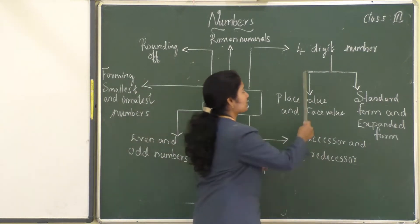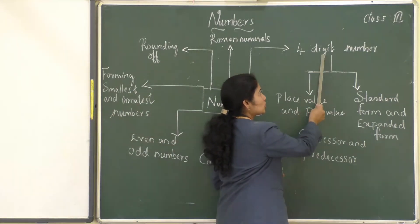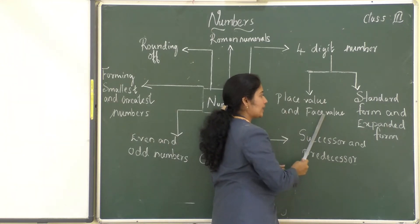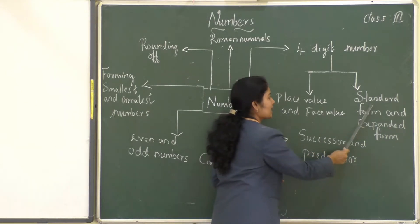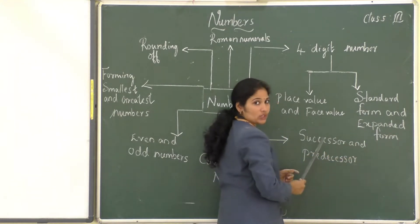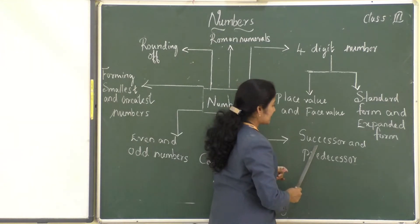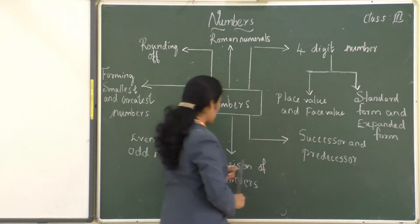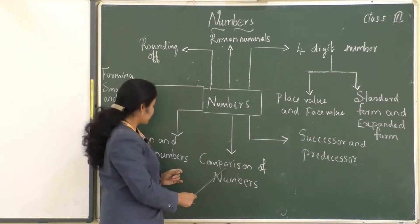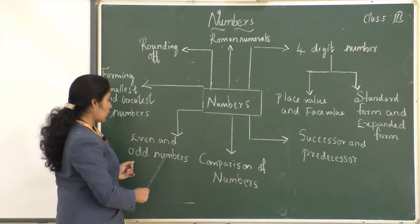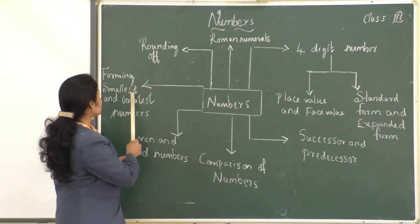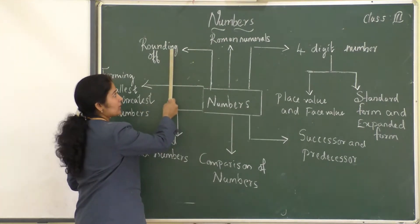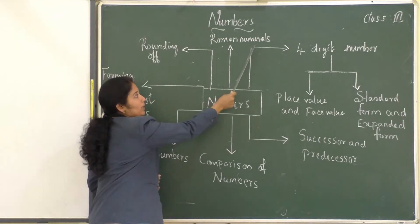The main topics of Chapter 1 are: 1. How to read a four-digit number — place value and face value of a four-digit number. 2. Standard form and expanded form of a four-digit number. 3. Successor and predecessor of a four-digit number. 4. Comparison of numbers. 5. Even and odd numbers. 6. Forming smallest and greatest numbers. 7. Rounding of numbers and Roman numerals.